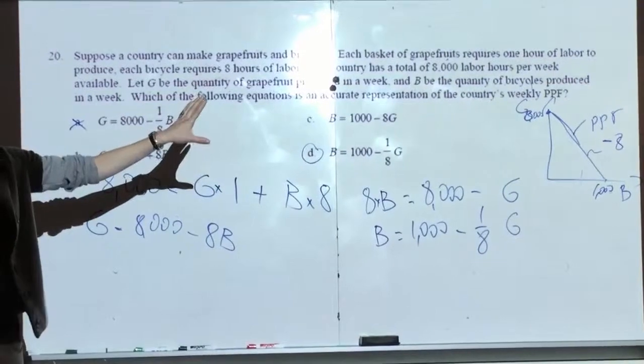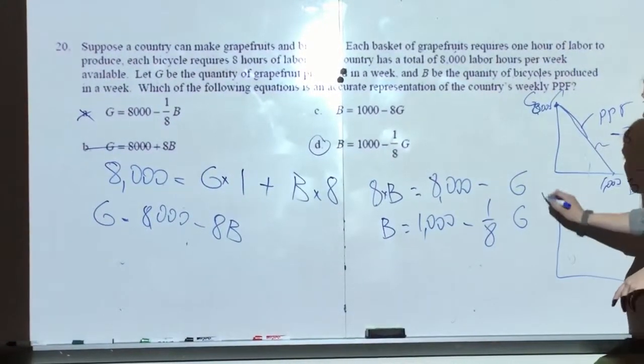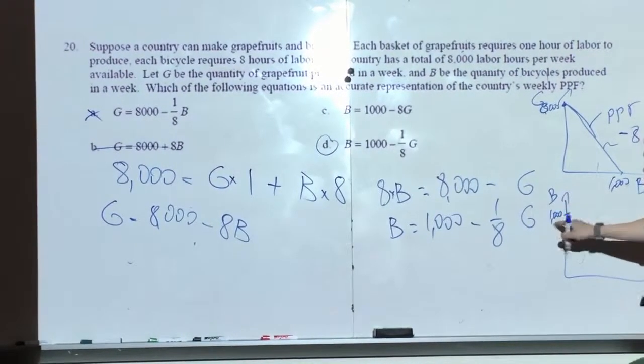If I put G on the y-axis, right? On the other hand, if I want to see if those work, and I put B on the y-axis, the intercept is 1,000.